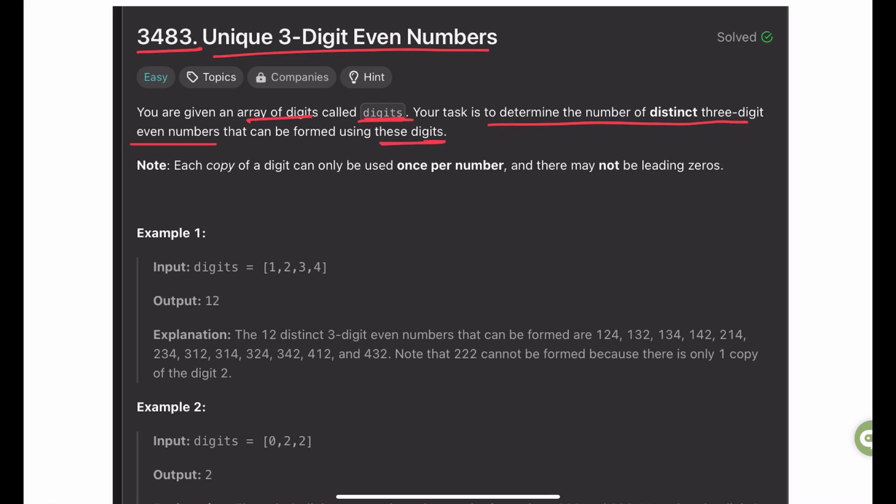In example number 1, we have 1, 2, 3, 4 and corresponding with those numbers can build a total of 12 combinations of 3-digit even numbers.